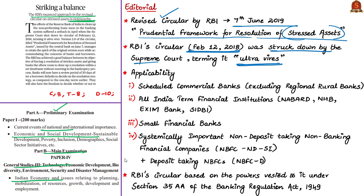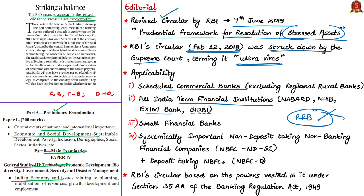The new circular is applicable to various entities such as scheduled commercial banks, all India term financial institutions including NABARD, National Housing Bank, EXIM Bank, Small Industries Development Bank of India, Small Finance Banks, and systemically important non-deposit taking NBFCs. Note that it is not applicable to regional rural banks. RBI has the right to direct banks to initiate insolvency proceedings in specific cases using its powers under Section 35AA of the Banking Regulation Act of 1949, and based on this provision the new circular was issued.